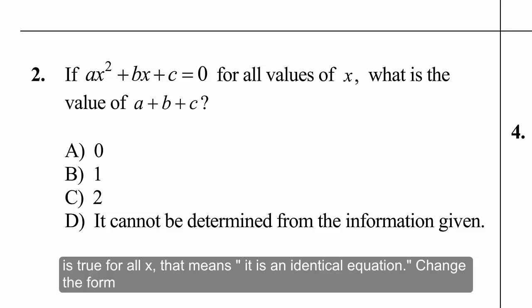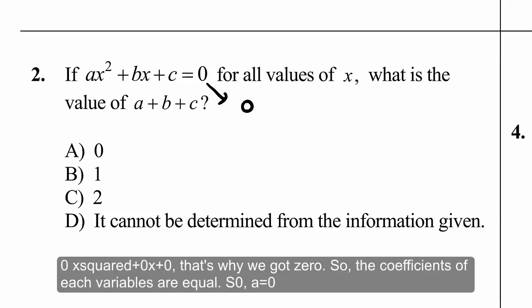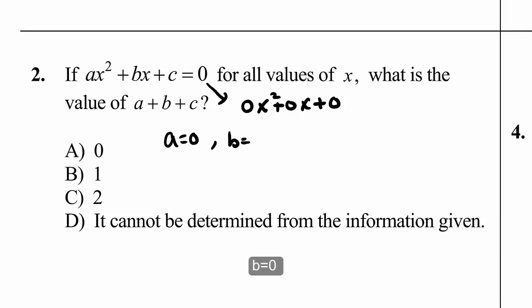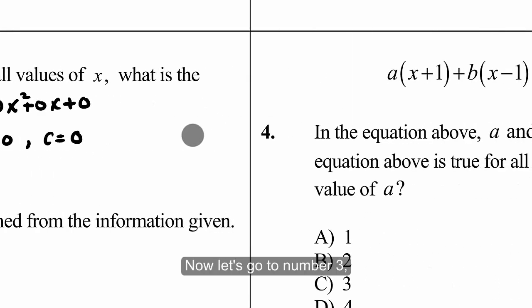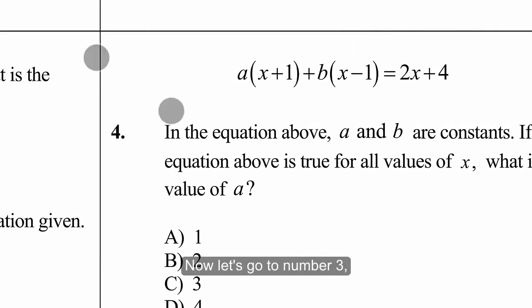Number two: x² + bx + c = 0 is true for all x, meaning it is an identical equation. Rewriting the right side as 0x² + 0x + 0, the coefficients of each term must be equal. So the coefficient of x² is 0 (already implied), b = 0, and c = 0. The sum of all three values is 0, so choice A is correct.